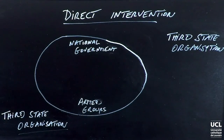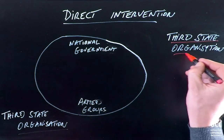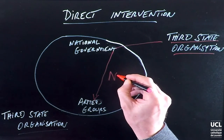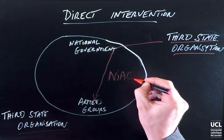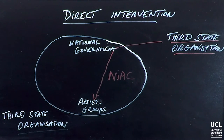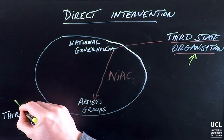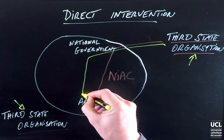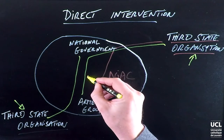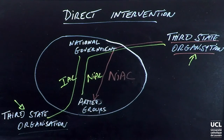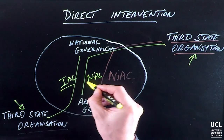The second consequence is that, when a third party intervenes alongside the national government to fight an armed group, the conflict remains non-international. In this case, the nature of the internal conflict is not altered by the outside intervention. Of course, when several states and organizations intervene alongside both the national government and the armed group, these solutions must be combined, and the complexity of the nature of the conflict increases considerably.